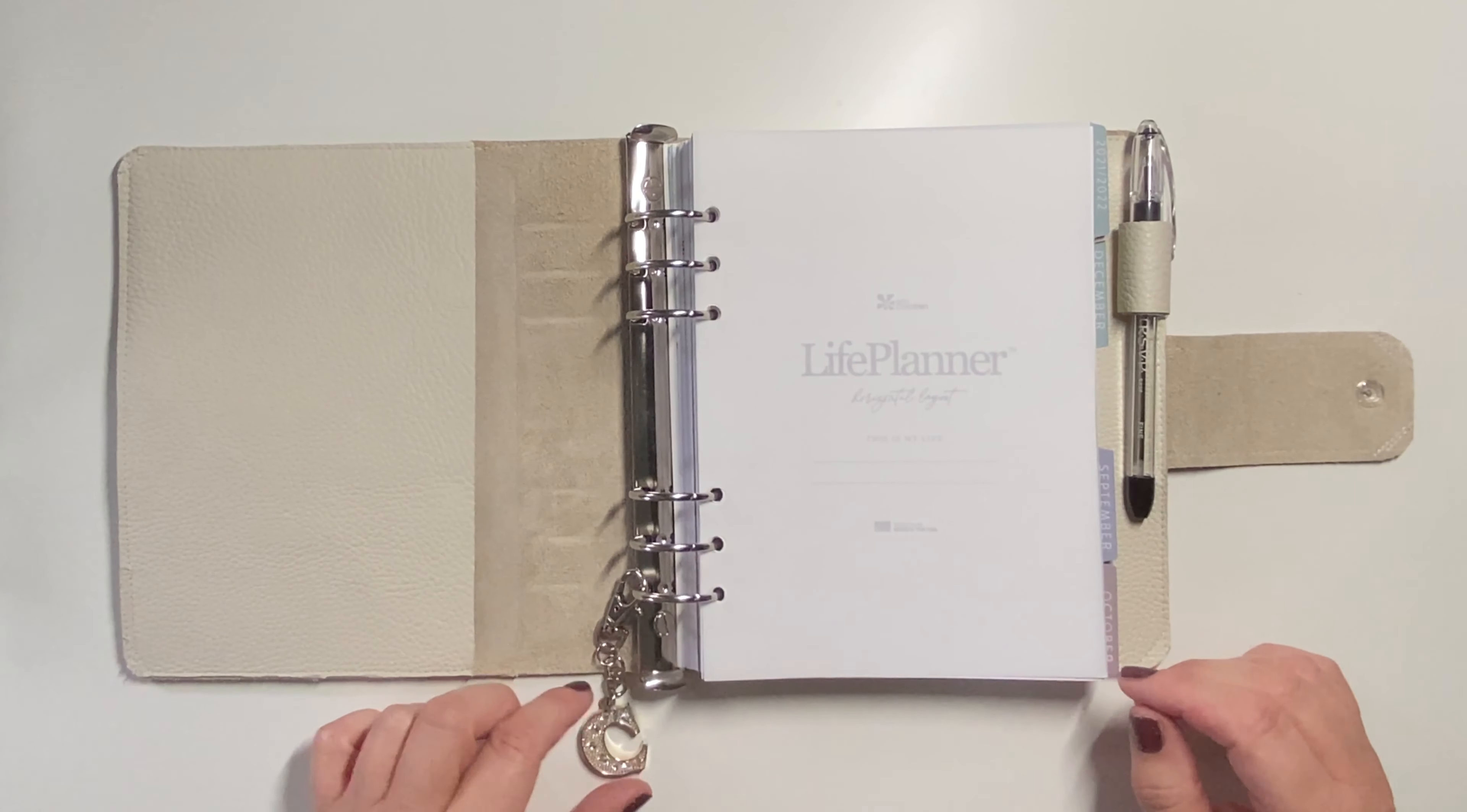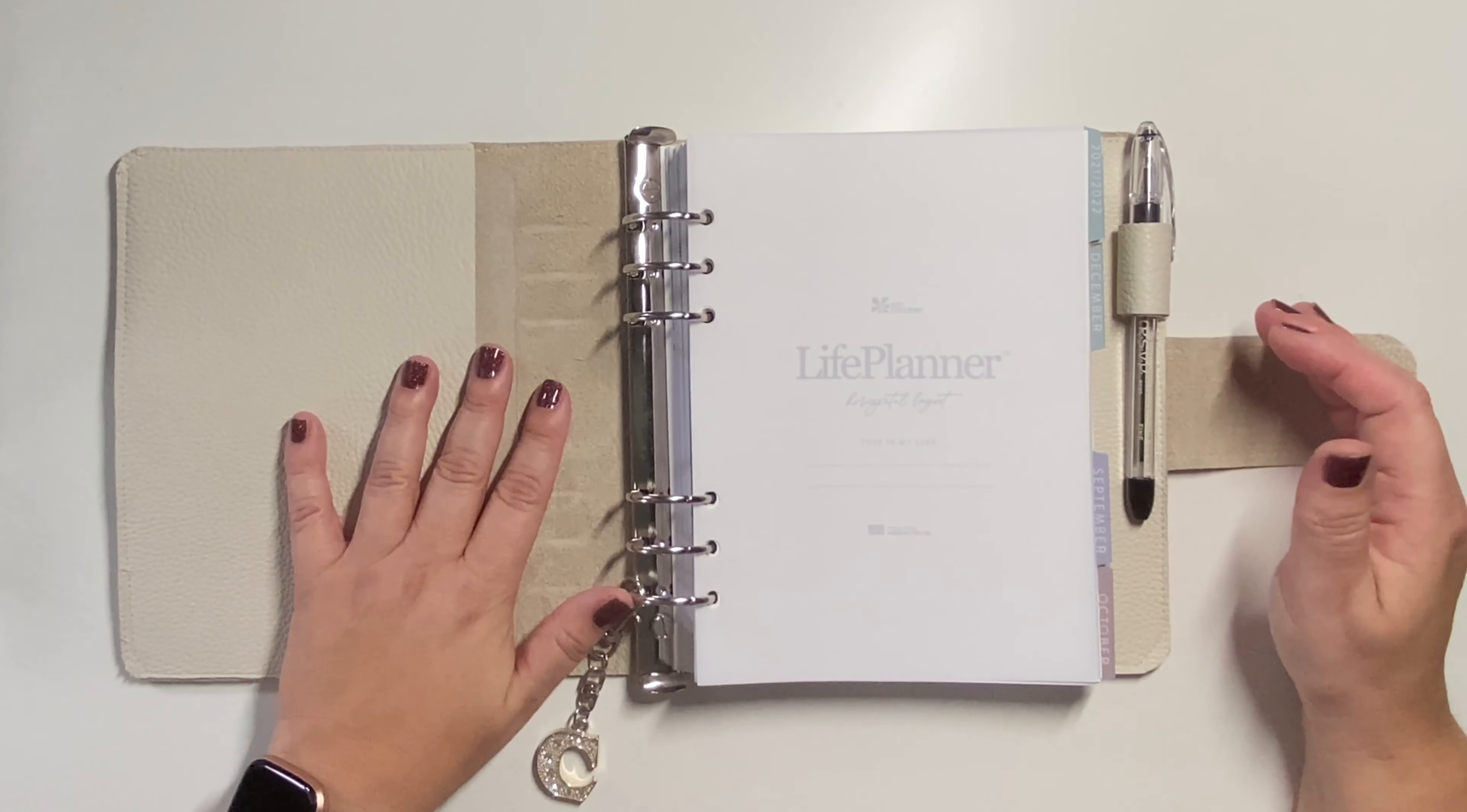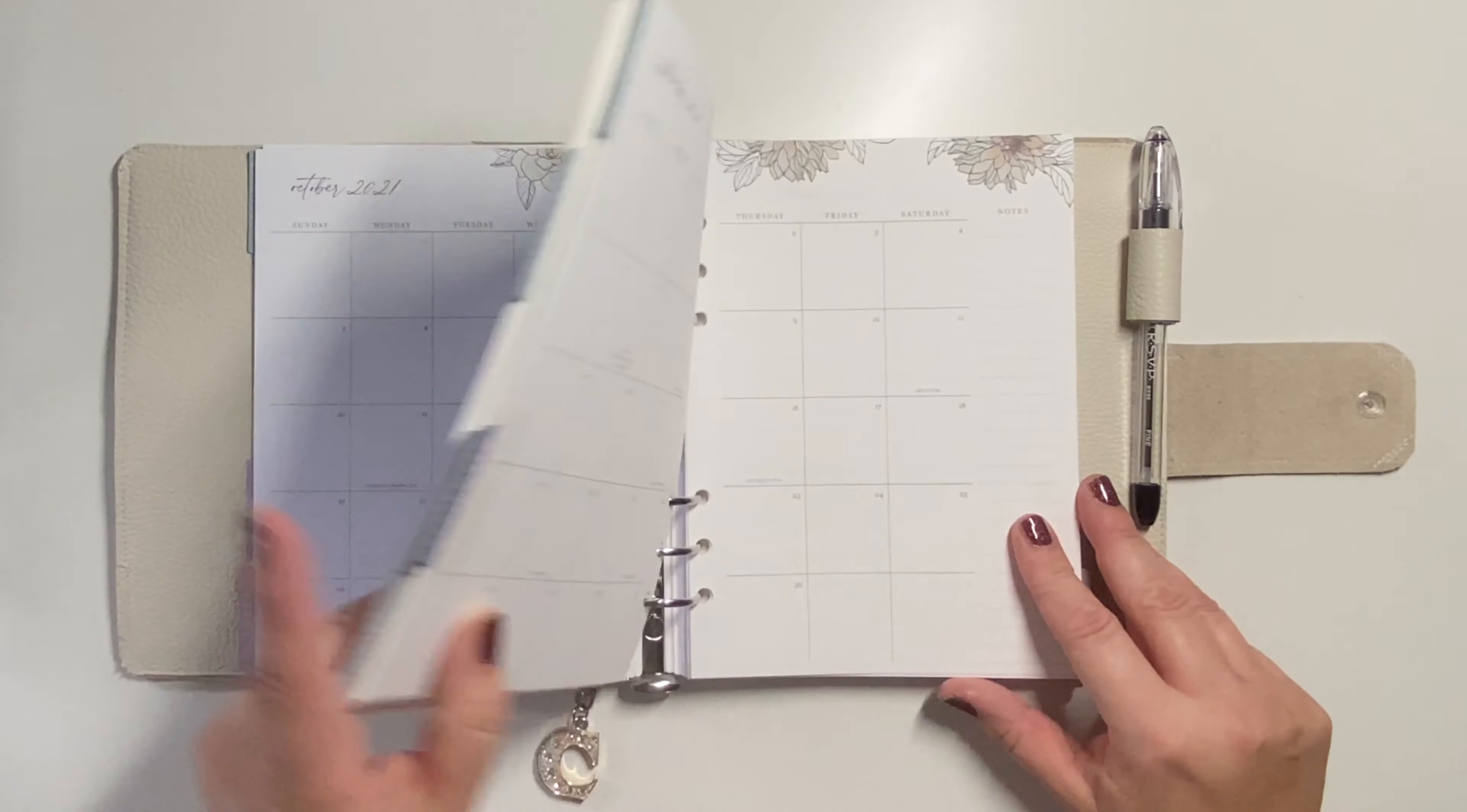And I added a little charm I have—C for Christine. I do want to get paper clips and pretty dashboards and all that kind of stuff. But for now, this is what I have. I added a pen loop, and then everything just turns real nice in here.